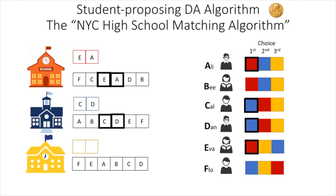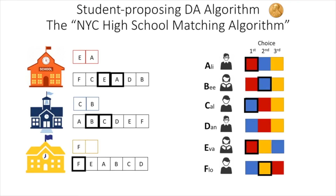For the two unmatched students, we look at their next preference. B's second choice is the blue school, and Flo's second choice is the yellow school. For Flo, there's space available in the yellow school, so Flo gets a tentative spot there. B's second choice is the blue school, which is already full, but B's priority in the blue school is higher than Dan's. So B gets a spot, and the school releases Dan — the lowest ranked of the three students competing for that school. Now B and Cal are assigned to the blue school, and Flo is assigned to the yellow school.